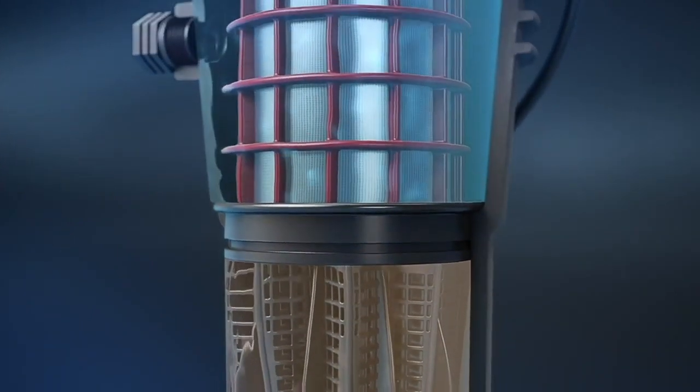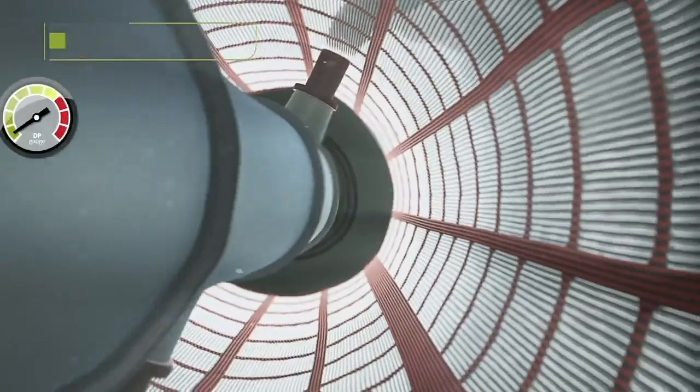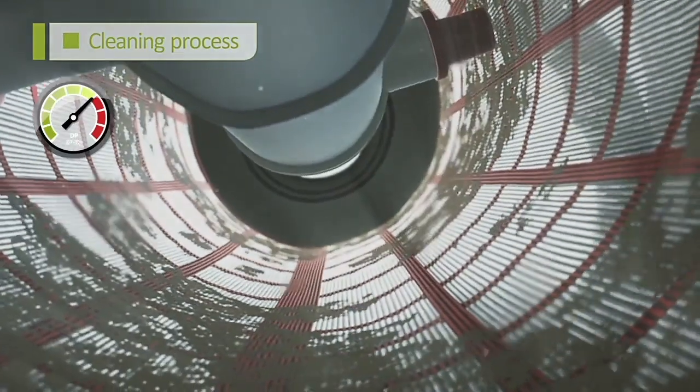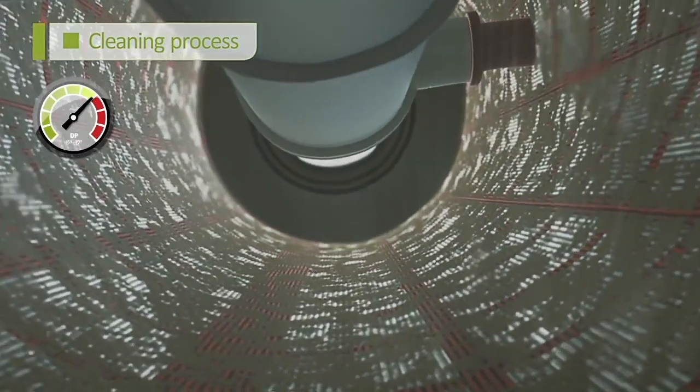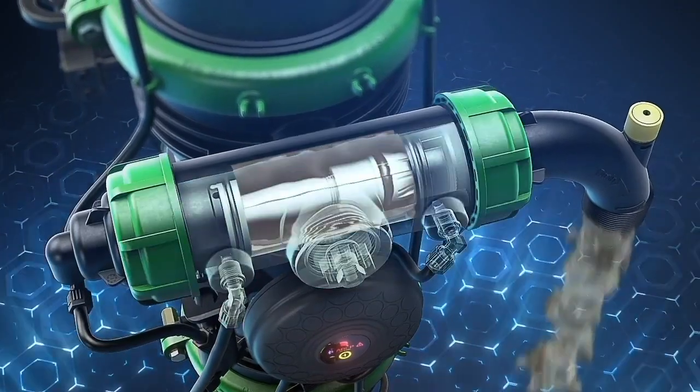Dirt is accumulated within the screens and clean water flows through the filter outlet. The cleaning process begins when the pressure differential reaches a preset level and the system activates a self-cleaning cycle by opening the flushing valve. A strong